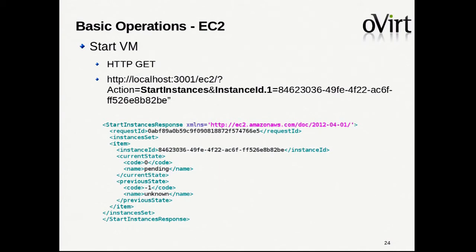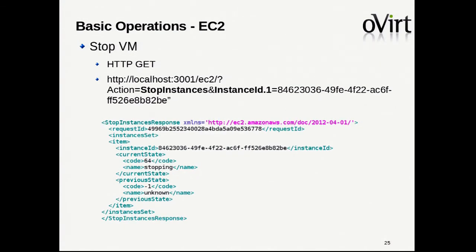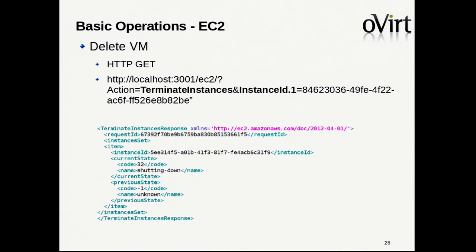Starting a VM is StartInstances — parameters require the specific VM ID to start, and the response shows the state as 'pending', as it is in EC2. Stopping a VM is StopInstances — again the instance ID, and the state in the response is 'stopping'. Deleting a VM is TerminateInstances with the specific instance ID — it just removes the VM from the system.